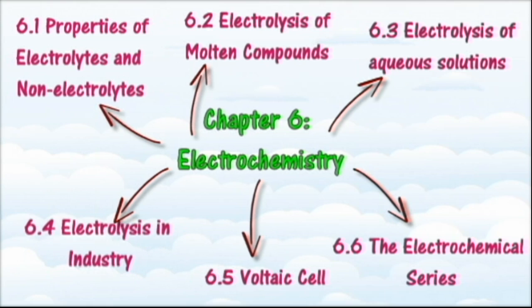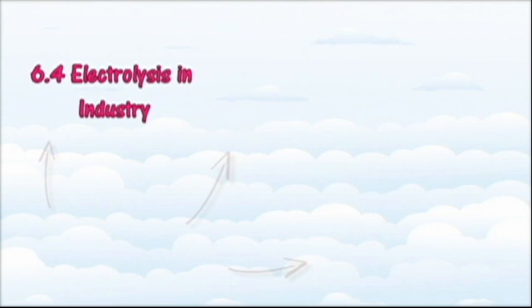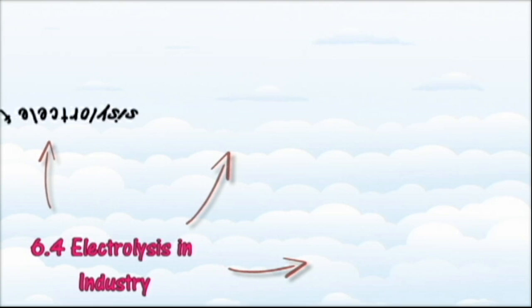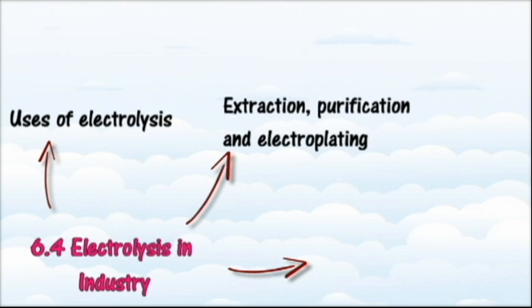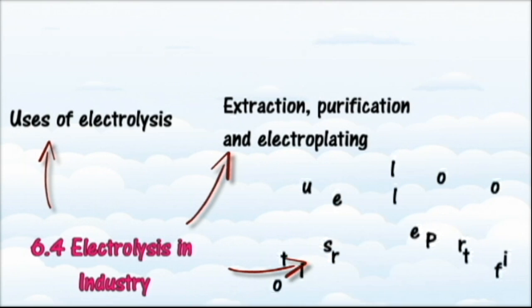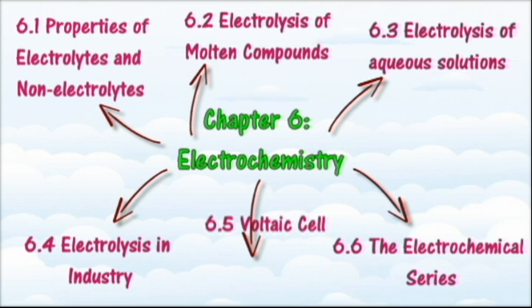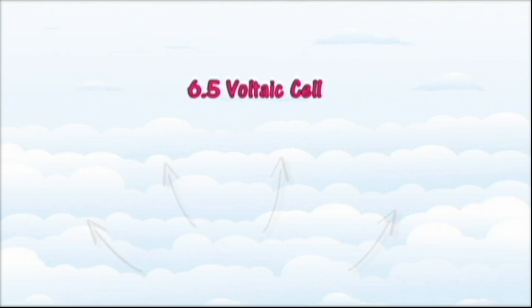In section 6.4 we will learn about the uses of electrolysis in industry. At the end of this section you should be able to state uses of electrolysis in industries, explain the extraction, purification, and electroplating of metals involving electrolysis in industries, write chemical equations to represent the electrolysis process in industries, justify uses of electrolysis in industries, and describe the problem of pollution from electrolysis in industry.